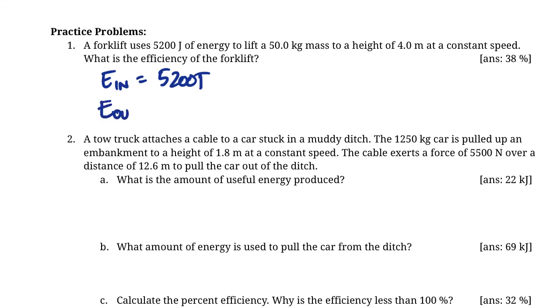We need to find the energy output, like how much work did it essentially do. We're lifting a mass a certain height, so the type of energy we're dealing with is gravitational. That's just mg delta H. If we assume this is on Earth, it's 9.81 times 50, which is the mass, times 4 meters, which gives us a gravitational potential energy of 1962 joules.